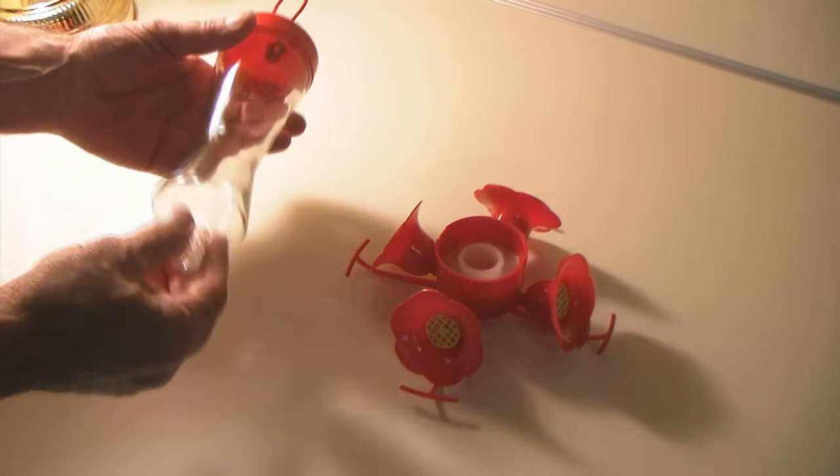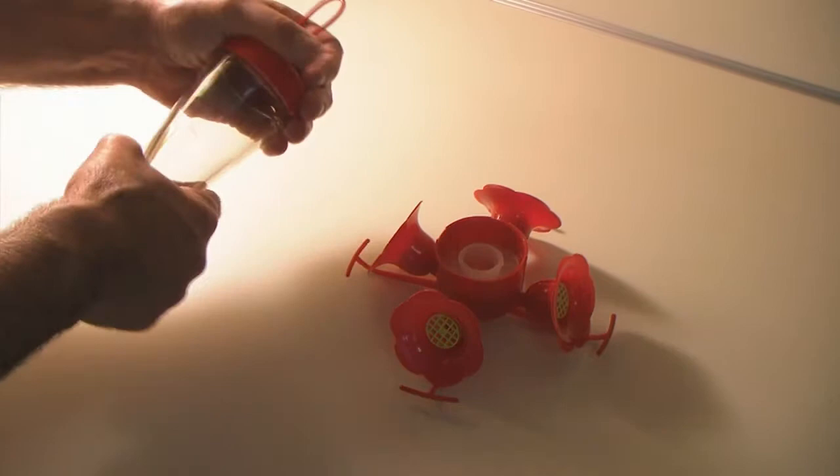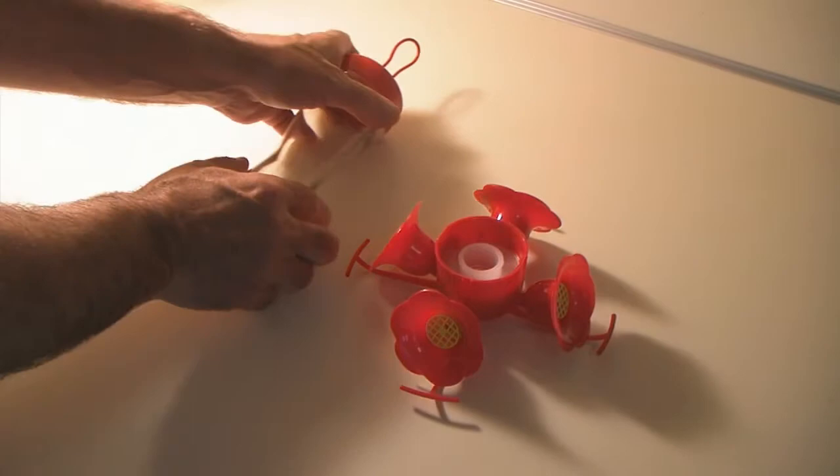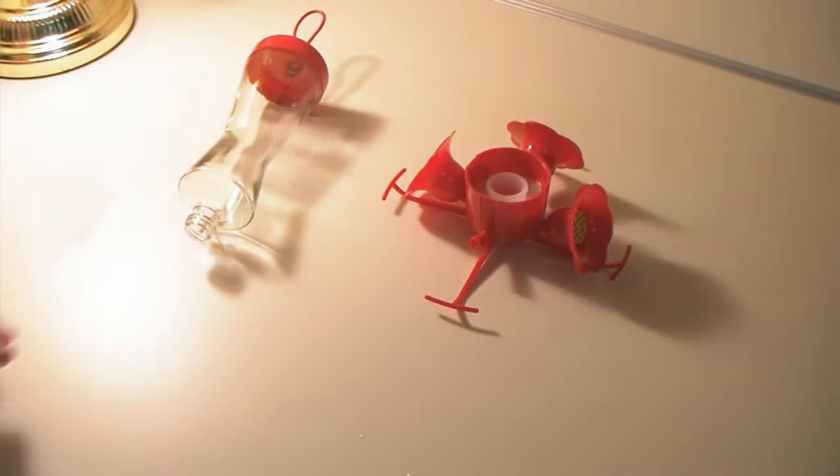And this part of it, where you put the nectar, is glass. So it's easier to wash it. Plus, everything comes apart. And that makes it easier to wash. And that's important because we don't want to kill all the hummingbirds.